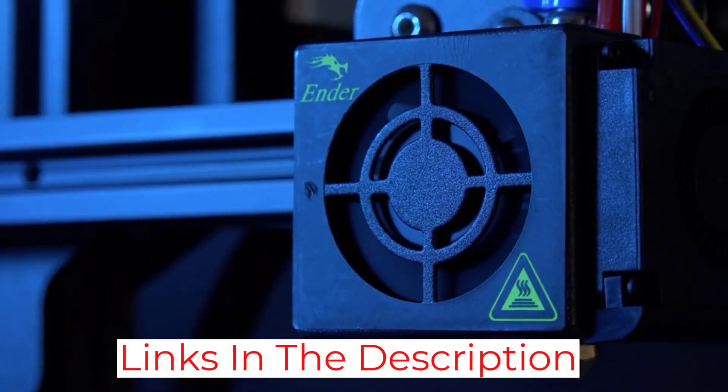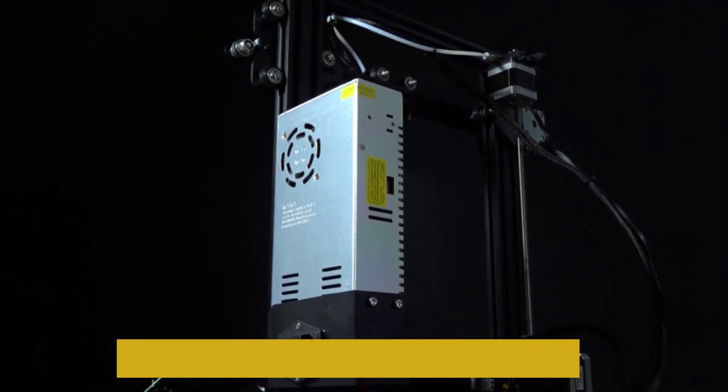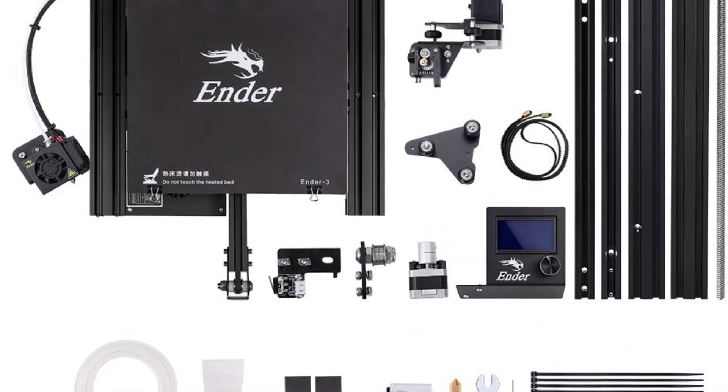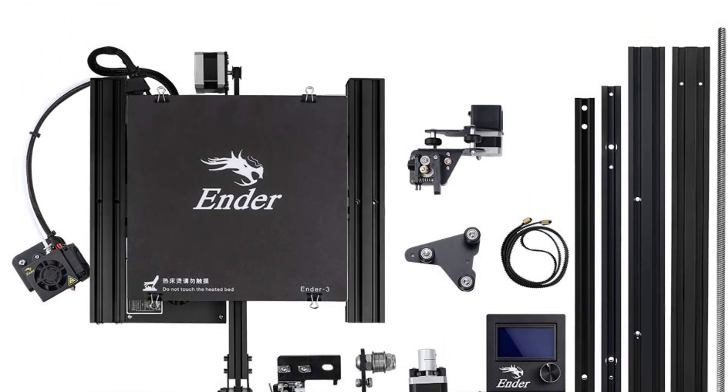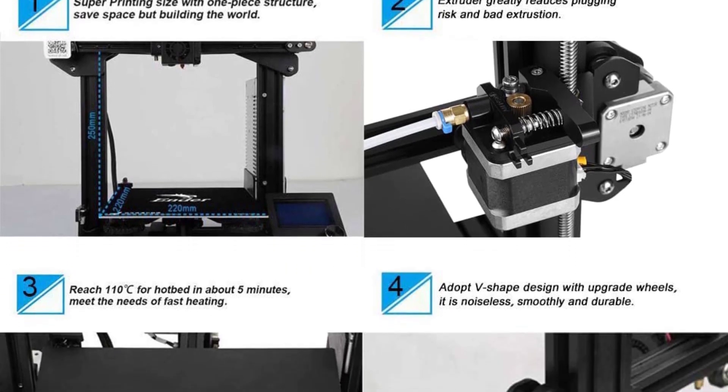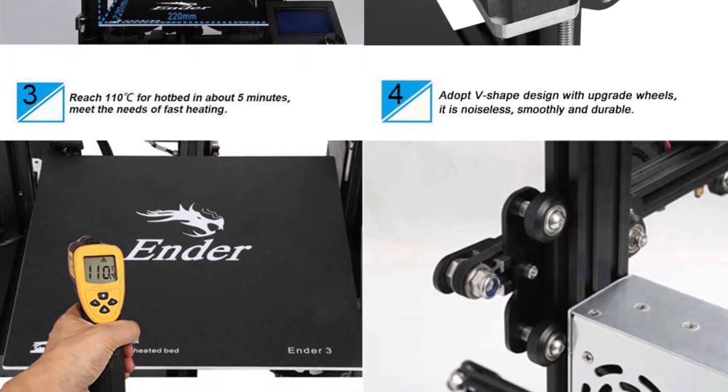The resume printing function is useful if you're prone to power cuts or want to print for several days straight and don't want to risk a huge ruined print, and the Ender 3 is fairly quick to assemble and shouldn't take more than an hour or so. However, it doesn't feature auto-leveling; you'll need to install a BL-Touch or similar kit for that.